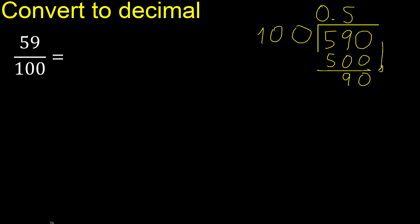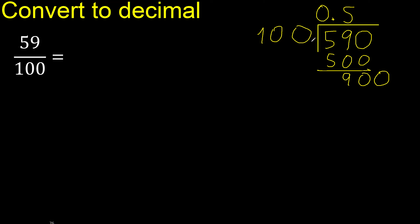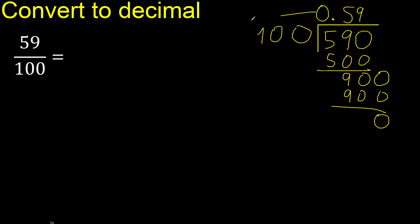There is no number that goes down, therefore complete — always complete with 0 point. Only once: 900. 100 multiplied by which number? 9 is 900. Subtract is 0. Therefore finish.